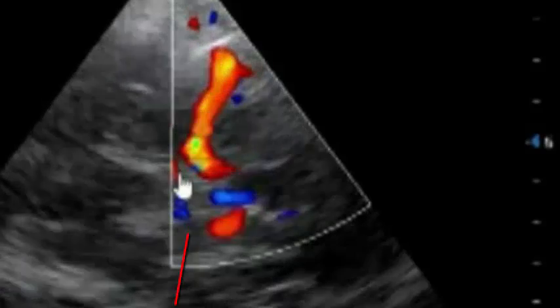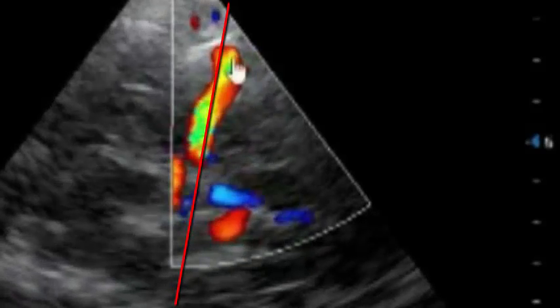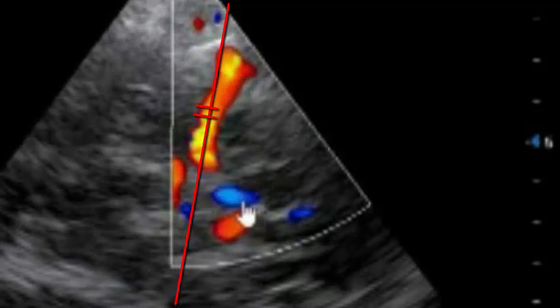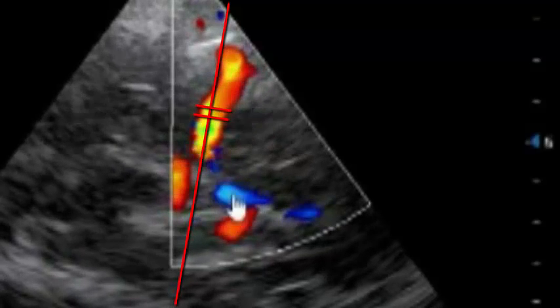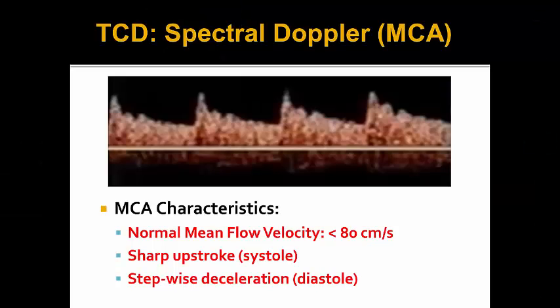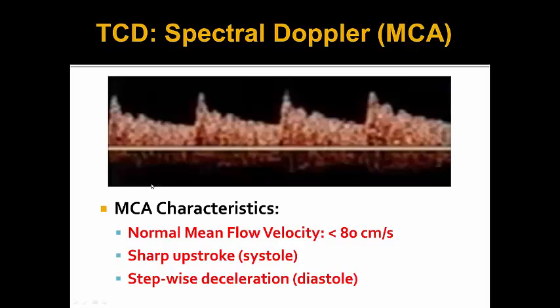Typically, what we would do is drop a pulse wave Doppler spectral Doppler line straight down, making sure we have the equal sign indicating pulse wave mode, and then hit Doppler again to interrogate the MCA. When looking at normal TCD Doppler interrogation of the MCA using spectral pulse wave mode, we move the baseline further down to see flows above the baseline, as that represents MCA flow going towards the probe. Normal mean velocity is less than 80 centimeters per second, with a sharp upstroke of systole and a stepwise deceleration of diastolic flow.